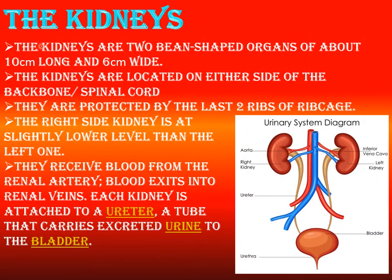The kidneys are the main excretory organs. They are bean-shaped and found as a pair in the body, located on either side of the spinal cord. They are protected by the last two ribs of the rib cage. The right kidney is slightly lower than the left. They receive blood from the main artery — the dorsal aorta — which branches into the kidney as the renal artery. The renal vein exits blood from the kidneys. Each kidney is connected to the urinary bladder through the ureter, and urine from the bladder is eliminated out through the urethra.